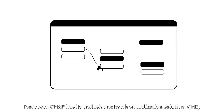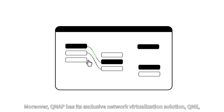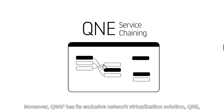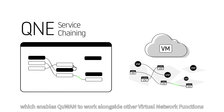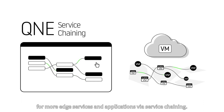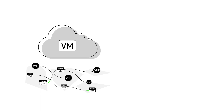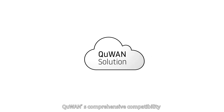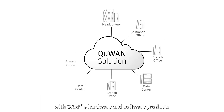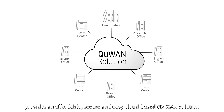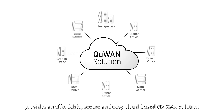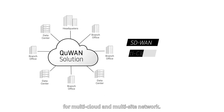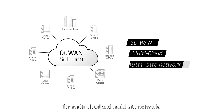Moreover, QNAP has its exclusive network virtualization solution, QNE, which enables Q-WAN to work alongside other virtual network functions for more edge services and applications via service chaining. Q-WAN's comprehensive compatibility with QNAP's hardware and software products provides an affordable, secure, and easy cloud-based SD-WAN solution for multi-cloud and multi-site networks.